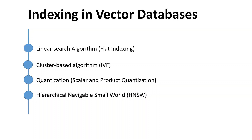Indexing primarily refers to the process of organizing high-dimensional vectors in a way that provides efficient querying of nearest neighbor vectors, or similar vectors. These indexes aim to do the same thing they do in traditional databases — enabling fast and efficient querying of data. In the context of a vector database, that data is high-dimensional embeddings.